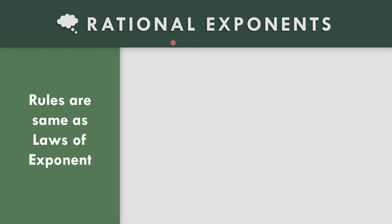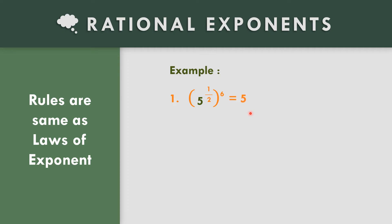In rational exponents, the rules are the same as the laws of exponents — we apply the laws of exponent when the given exponent is a fraction. In example number one: five raised to one-half, raised to the sixth power. Copy the base five, multiply one-half times six: that is six over two, which equals three. Five to the third is five times five times five, which equals one hundred twenty-five.